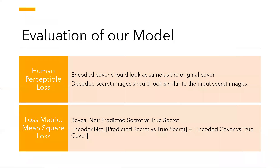For the evaluation of our model, we are using two parameters. The first is the human perceptible loss, according to which the encoded cover should look similar to the original cover for a human, and the decoded secret image should be similar to the input secret images. For training our model, we are using mean squared loss as a loss metric. For the reveal network, we use mean squared loss only for the secret images, while for the encoding network, we take into consideration both the secret and the cover images.